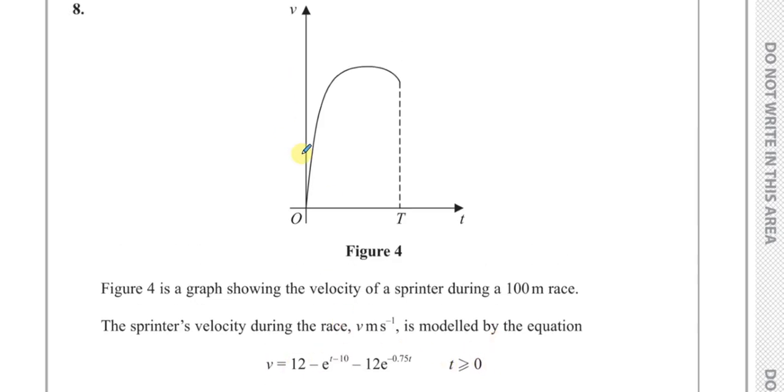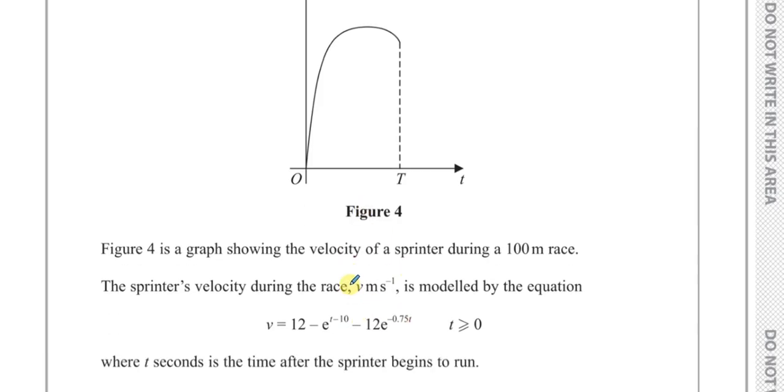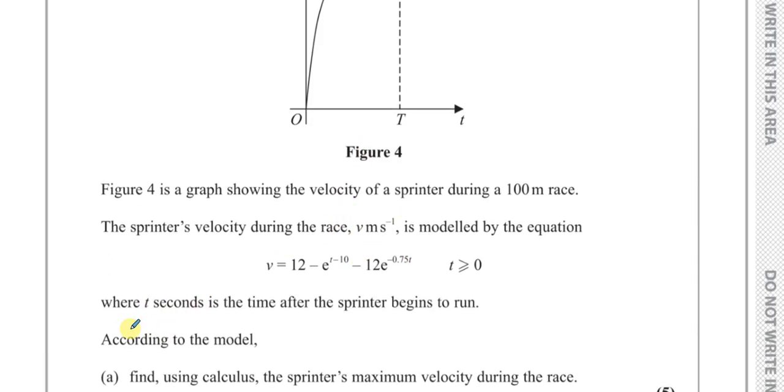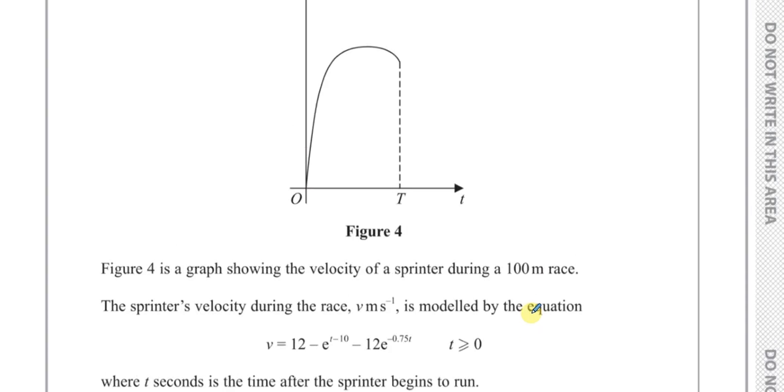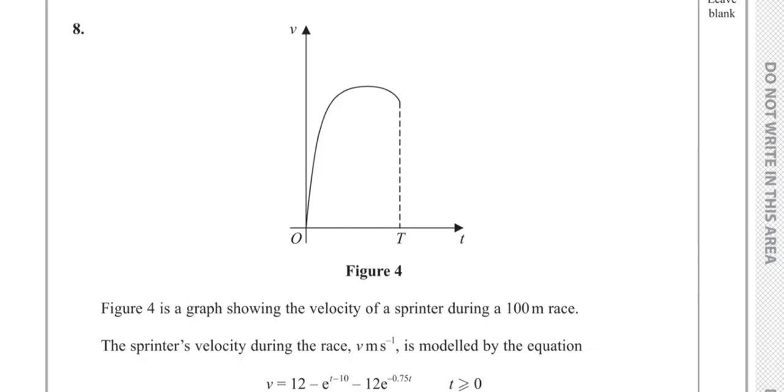So this is not a linear graph. This is kind of like an exponential type of graph, a combination of different exponential type of graphs. And according to the model, we've got to find, using calculus, the sprinter's maximum velocity during the race. So we've got to find basically the highest velocity that he reaches, which is somewhere over here.